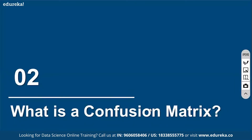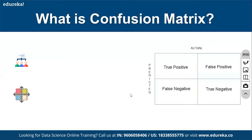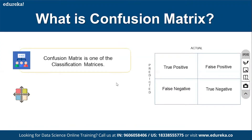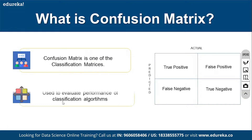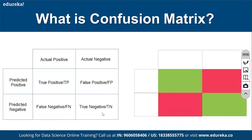The confusion matrix is a performance evaluation tool for classification models used to evaluate how well the model is performing. The green diagonal represents correctly classified records, and the red off-diagonal represents incorrectly classified records.